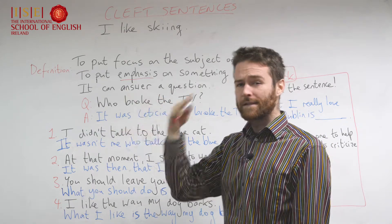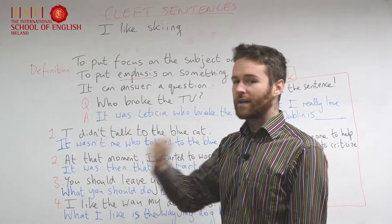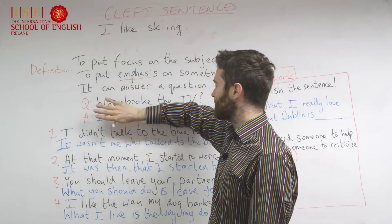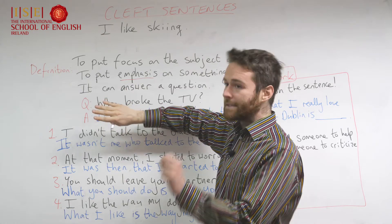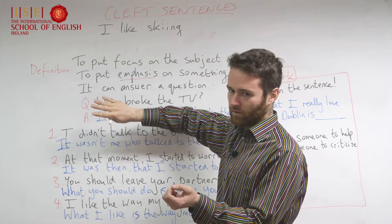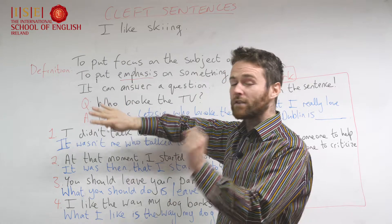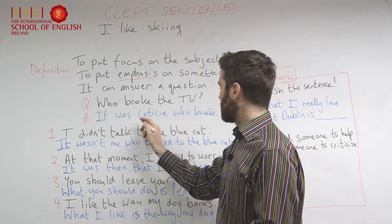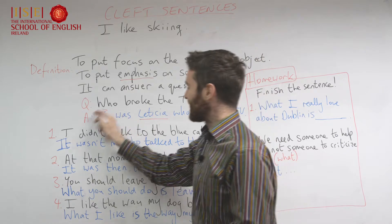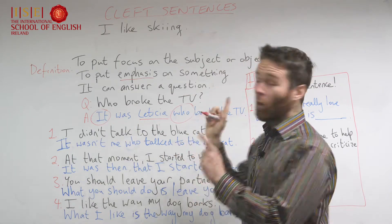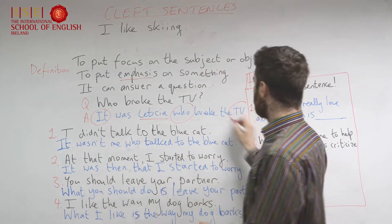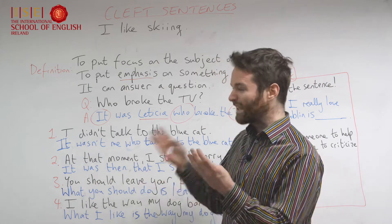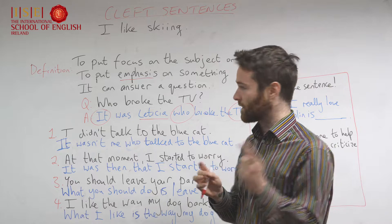We use cleft sentences to avail of that emphasis. It can answer a question — for example, 'Who broke the TV?' The simple answer: 'Letitia broke the TV.' But with cleft sentences we can change that around. We could say 'It was Letitia who broke the TV' using 'it' plus 'who,' or we could say 'It was the TV that was broken by Letitia.' With this structure we can change our focus — focus is key.